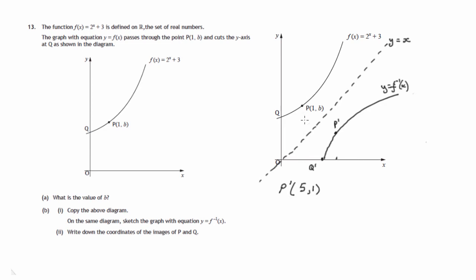So p dashed is the point (5, 1). 1 goes in, 5 goes out. 5 goes in, 1 comes out. So that's p dashed.